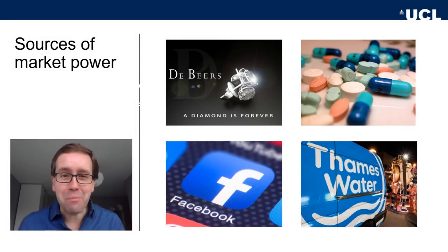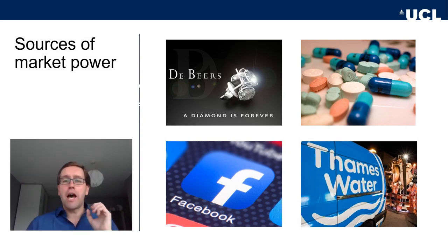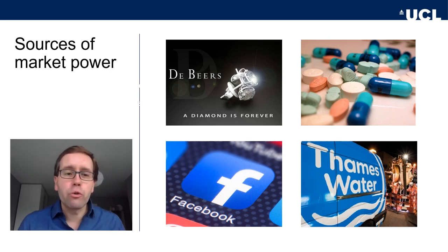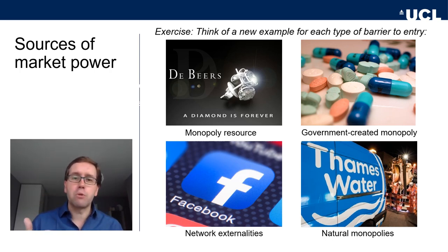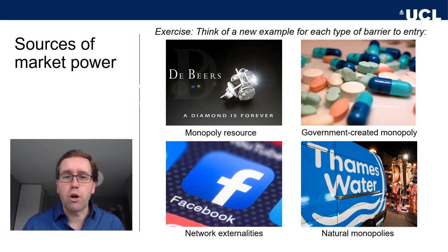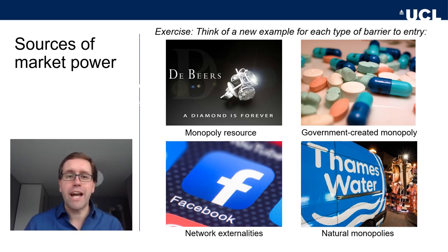Let's do a quick exercise to check our understanding. Look out of the window for a second, then take a piece of paper or open a new document. Come up with an example for each of our four types of barriers to entry: monopoly resources, government-created monopolies like patents and copyrights, network externalities, and natural monopolies — economies of scale. Pause the video and see if you can come up with a new, interesting, original example for each of those four categories.